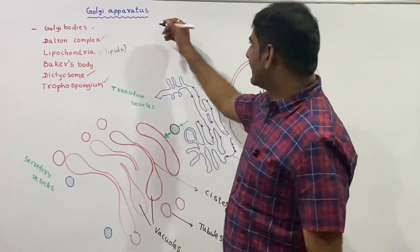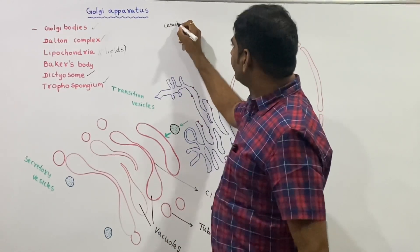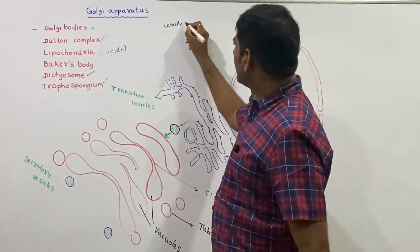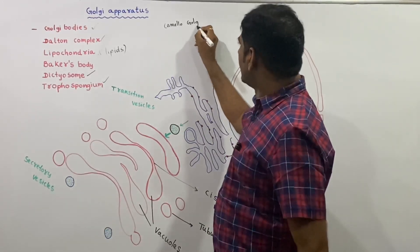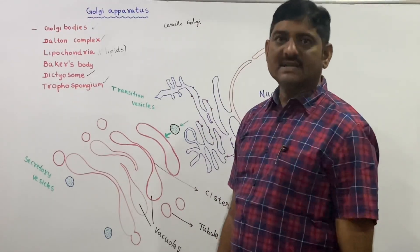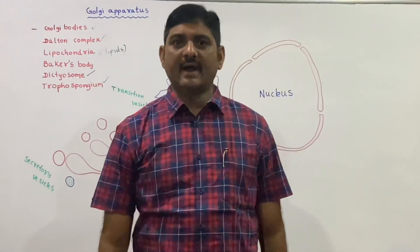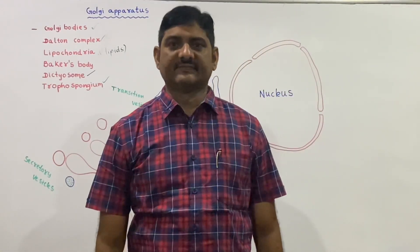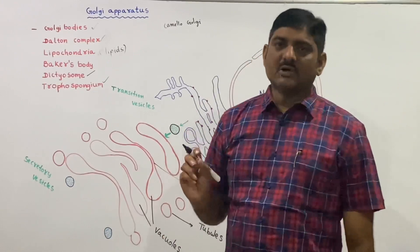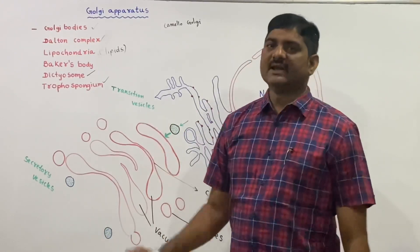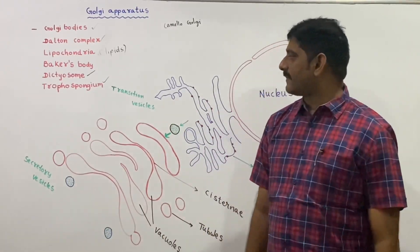The Golgi apparatus was first discovered and observed by Camillo Golgi in the nerve cells of owls and cats. This is the first milestone which we will get started with regarding the Golgi apparatus.